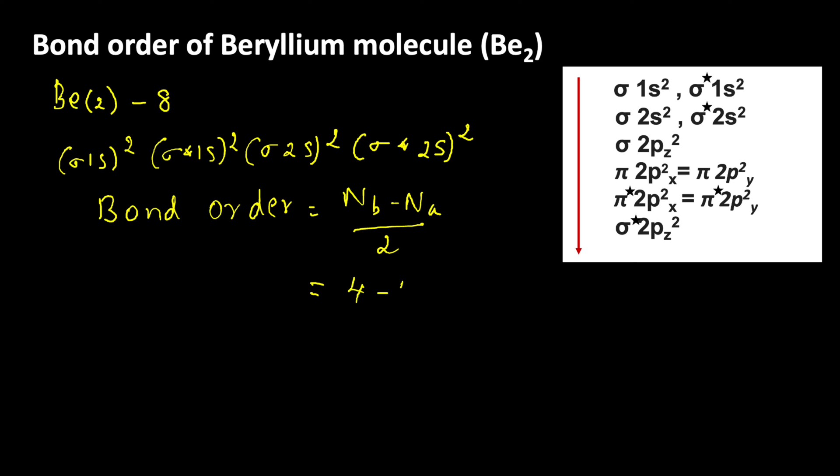So 4 minus 4 by 2, which equals 0 by 2 which is equal to 0. It means bond order of beryllium molecule is 0.